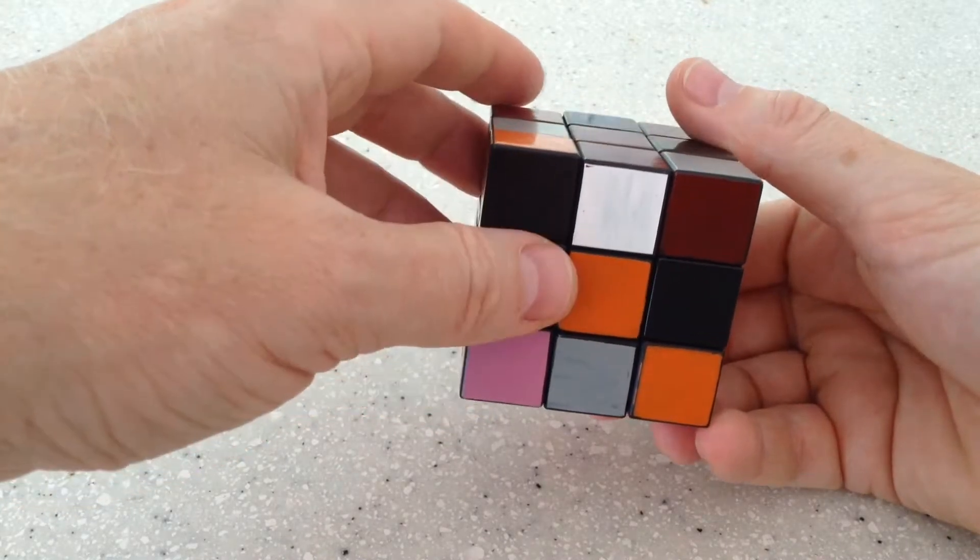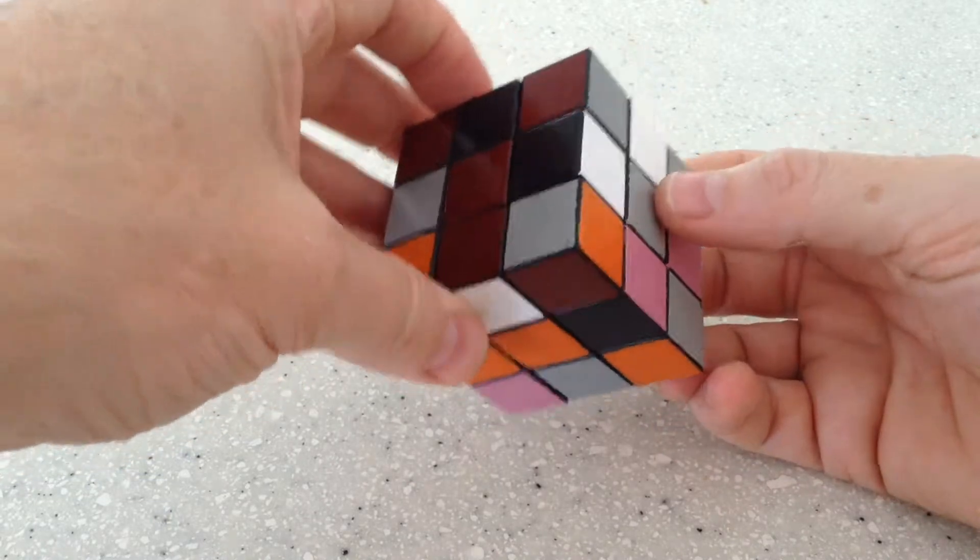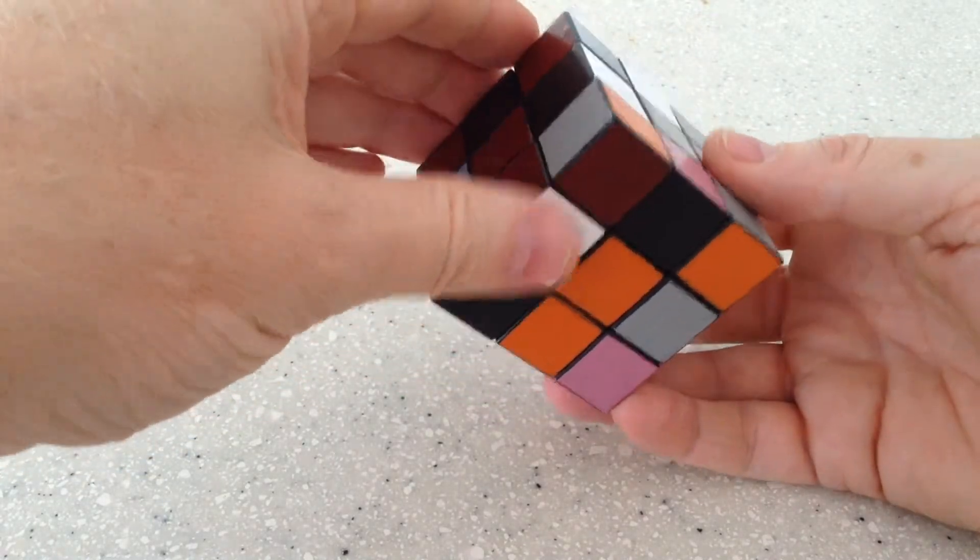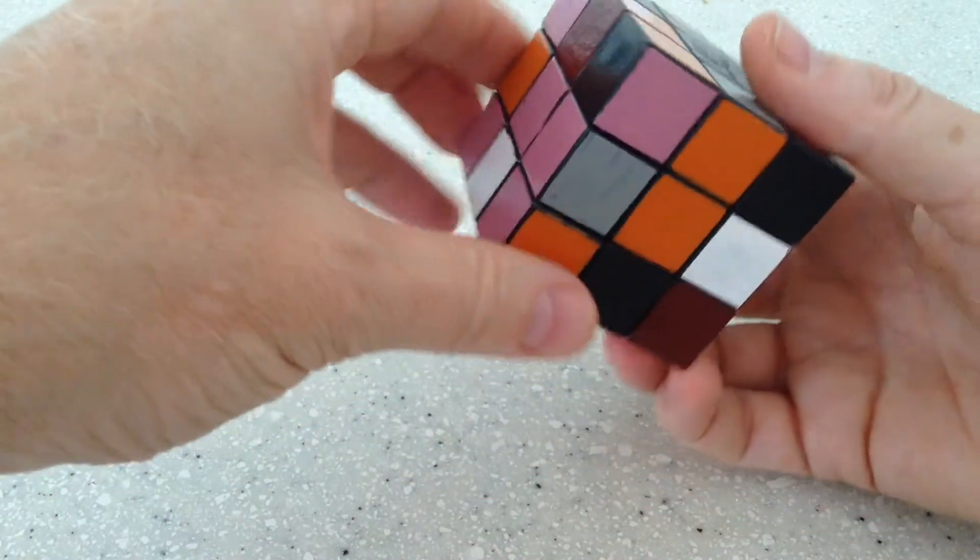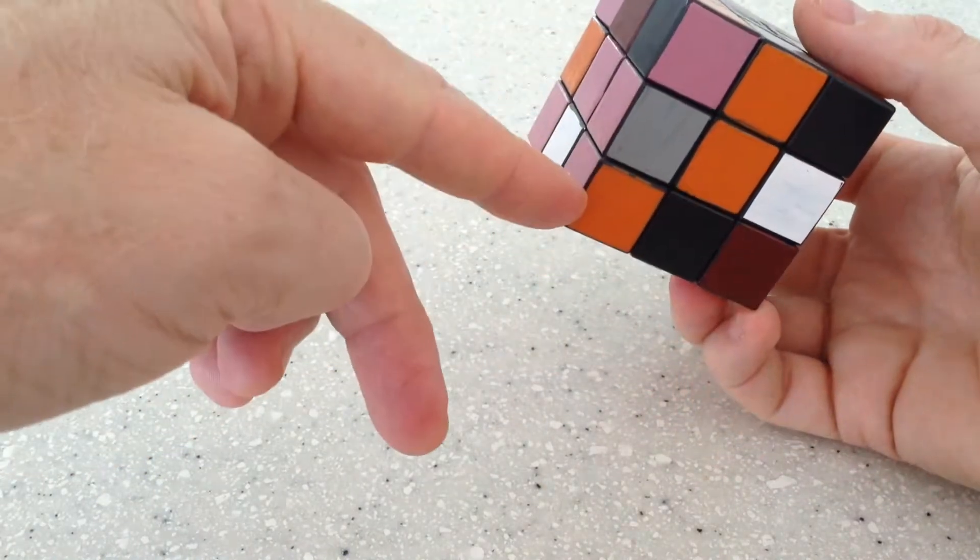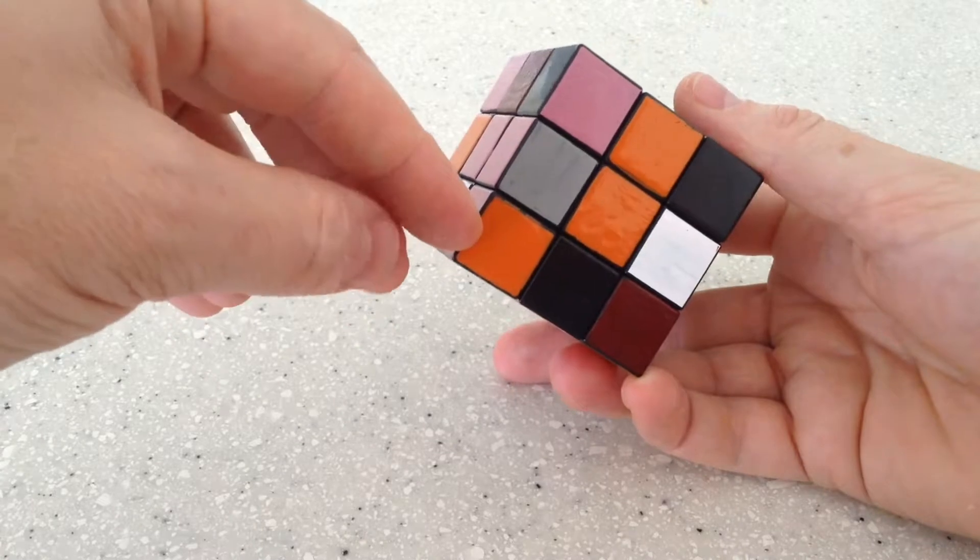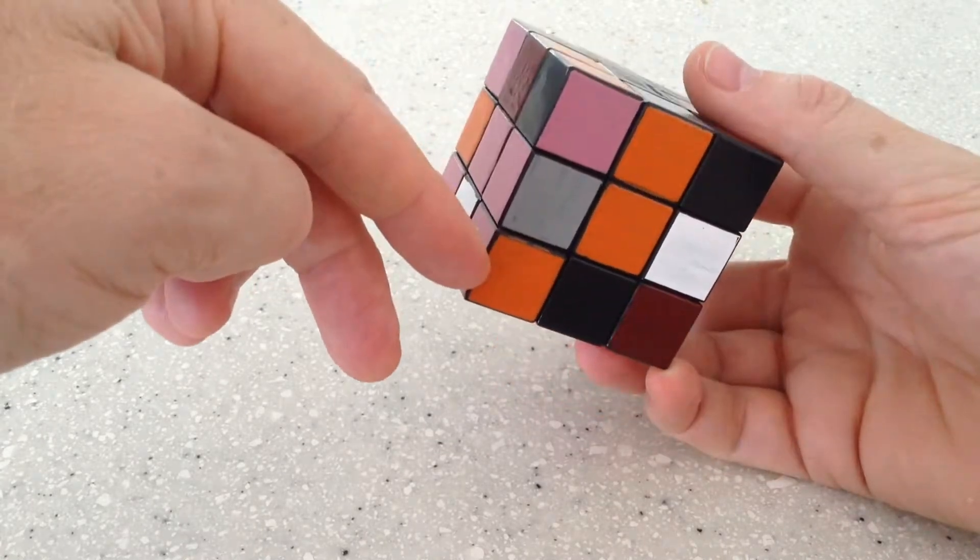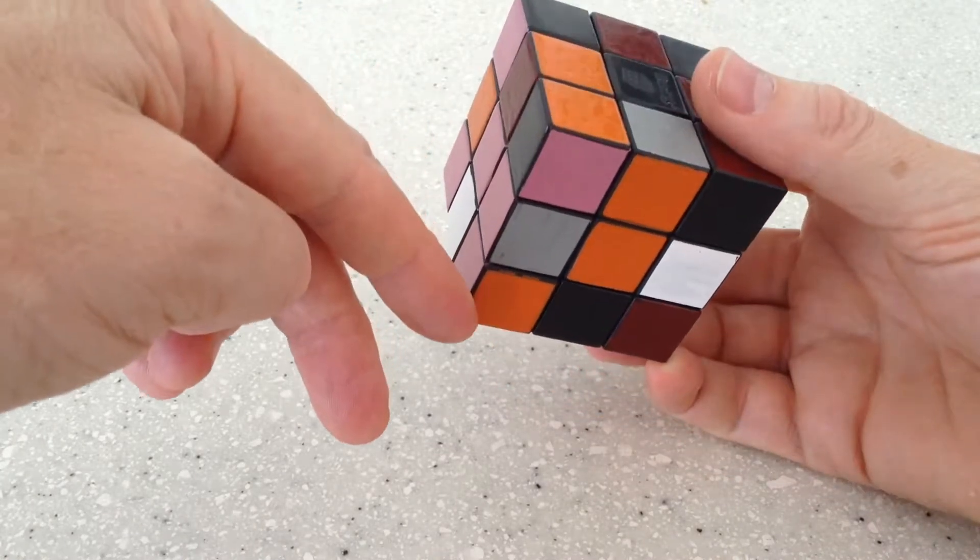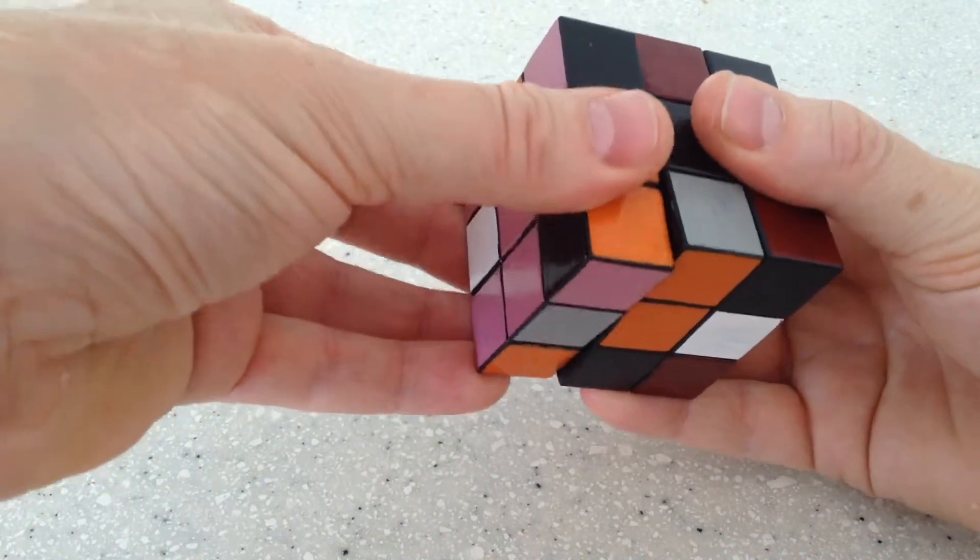And I'm going to use the exact same move that I just used, just in a slightly different combination. What I'm doing is positioning the only corner that is in the correct orientation in this bottom corner here. And I'm going to work on this side.